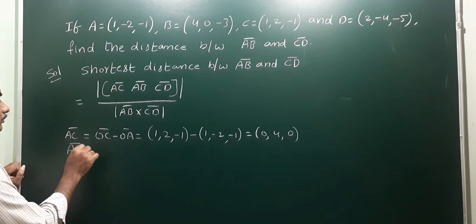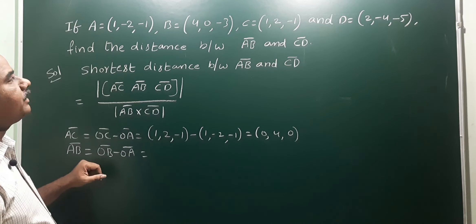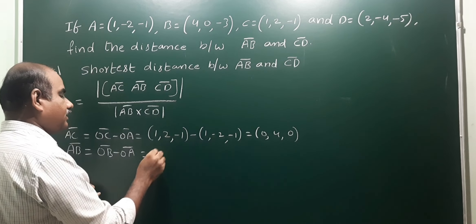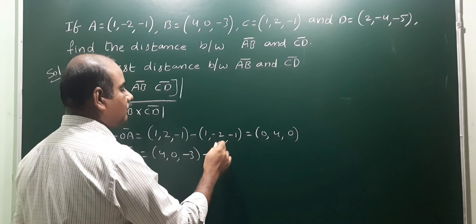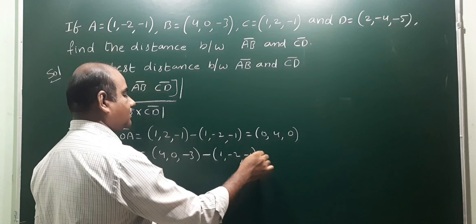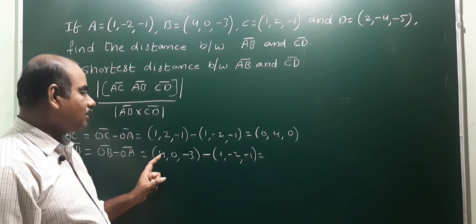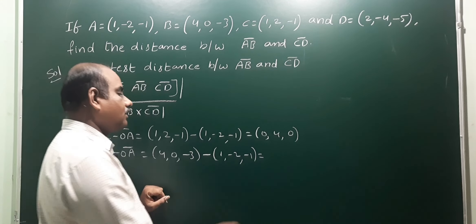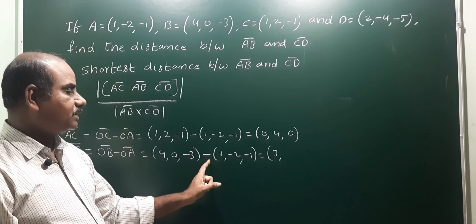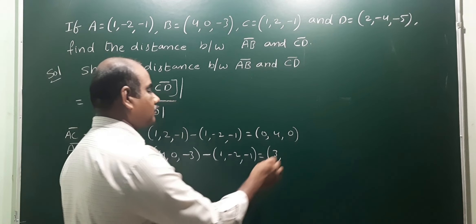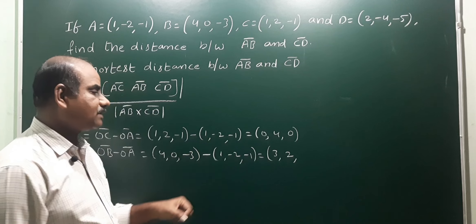AB means OB minus OA. OB is point B: (4, 0, -3), minus OA which is (1, -2, -1). Subtracting corresponding elements: 4 minus 1 = 3; 0 minus (-2) = 0 plus 2 = 2; -3 minus (-1) = -3 plus 1 = -2. So AB vector is (3, 2, -2).